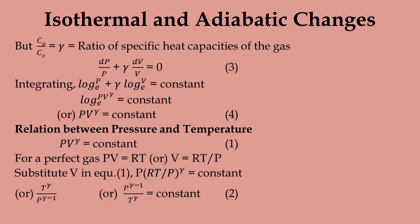Since Cp/Cv = γ, the ratio of specific heat capacities of the gas, the equation becomes dP/P + γ·dV/V = 0. Integrating this equation, we get PV^γ = constant, which gives the expression for adiabatic change.